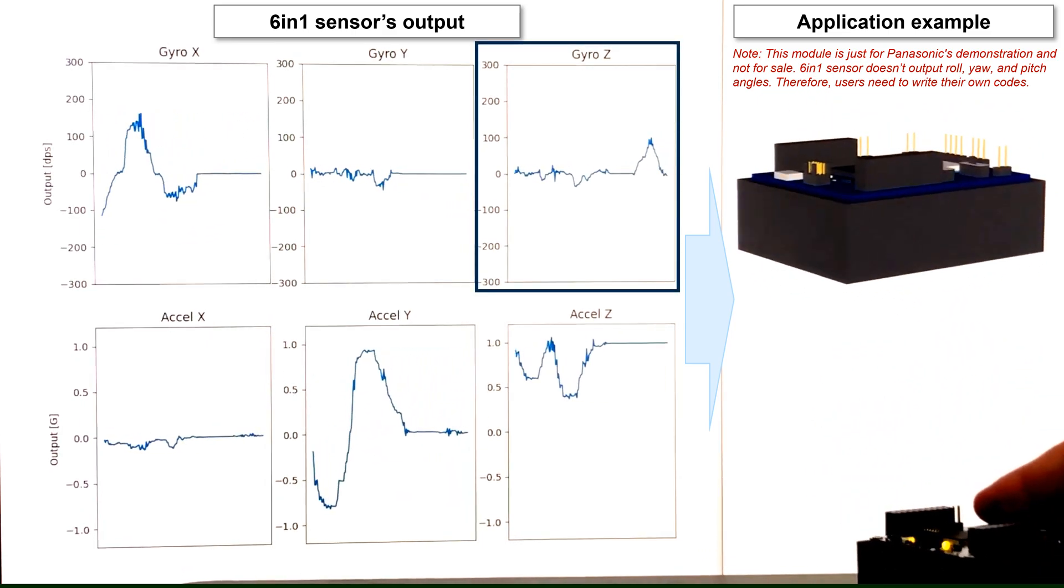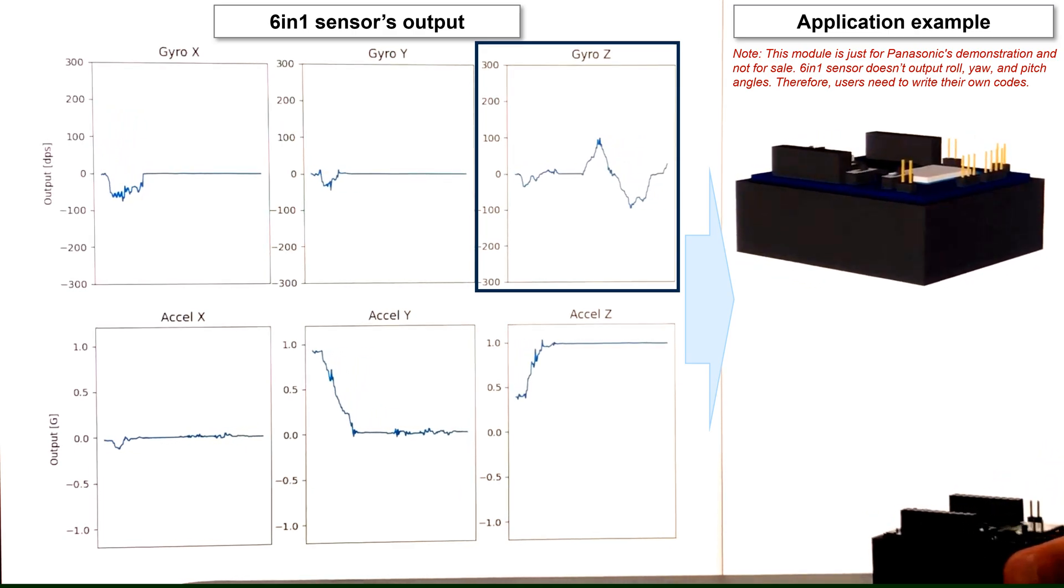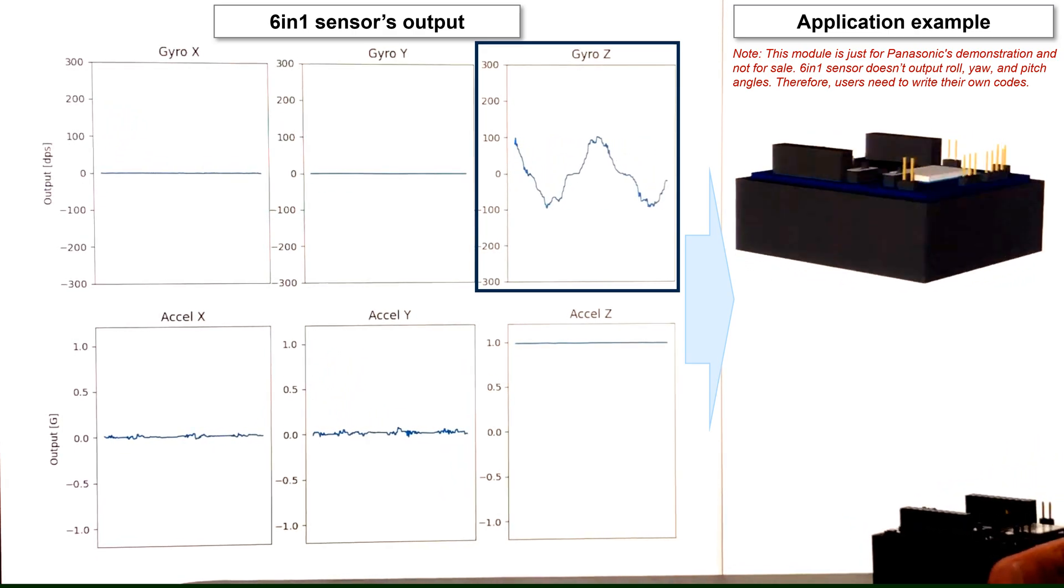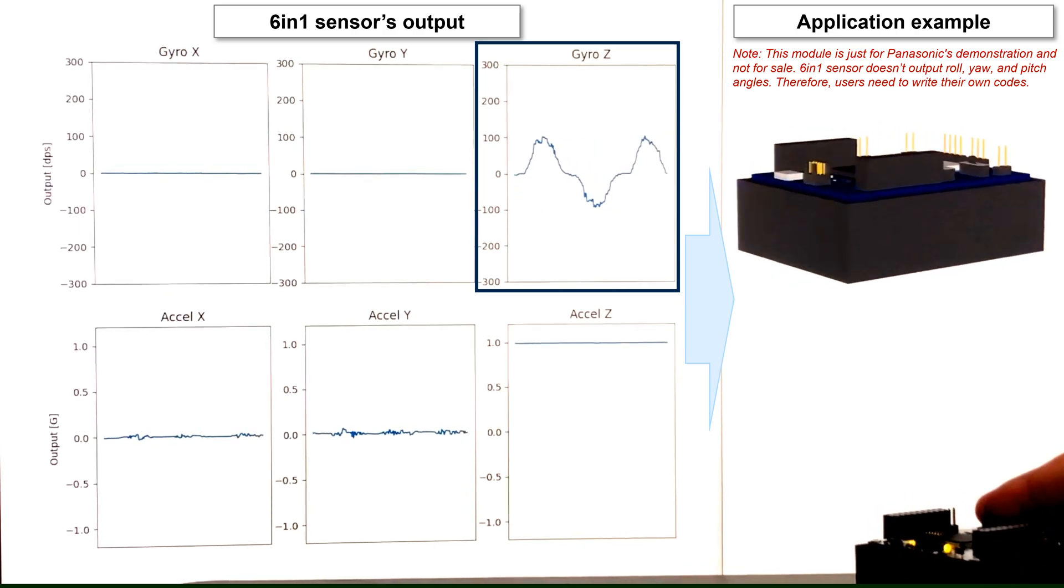Next, this is a yaw detection. Only gyrosensor Z axis is mainly used. Accelerometers have almost no responses.